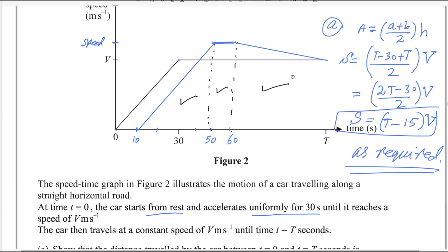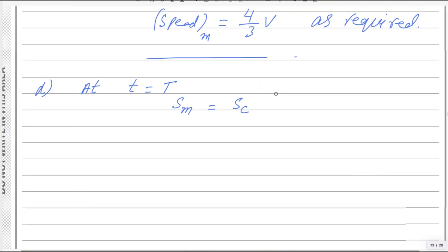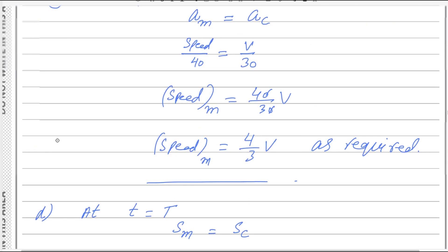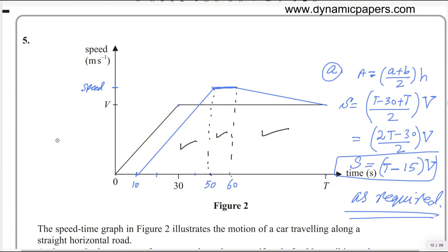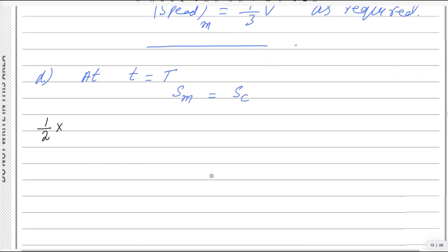There are multiple ways to split it, but triangle, rectangle, and trapezium is the easiest. The area of the triangle: formula is one-half times base times height. For the motorbike, the base is 40 (from t equals 10 to t equals 50) and the height is the speed 4V over 3. So the triangle area is one-half times 40 times (4V over 3), plus the area of the rectangle.